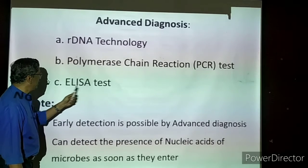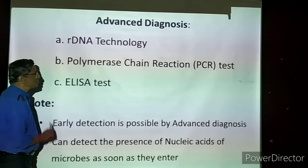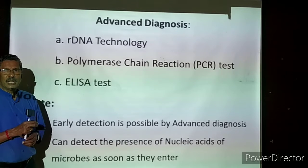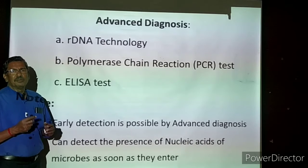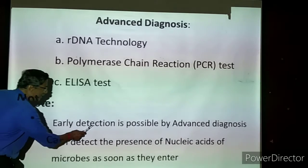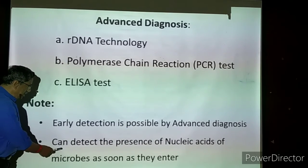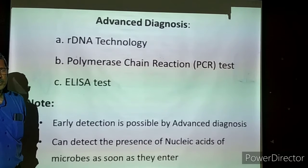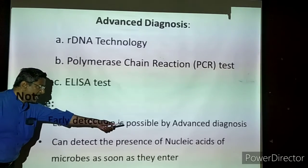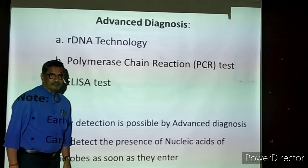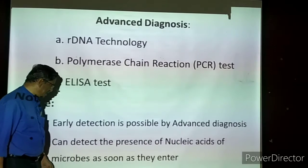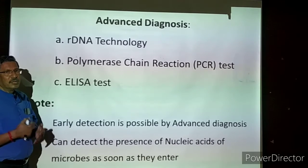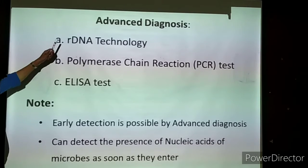The next one is ELISA test - E-L-I-S-A, all capital letters as it is an abbreviation. These tests are considered advanced because they work at the molecular level. Also, before the individual is suffering, we can find out whether the individual is having the microorganism. Early detection is possible by advanced diagnosis. We can detect the presence of the nucleic acid of the microbe. Nucleic acids means DNA and RNA - we can identify the DNA or RNA of microbes as soon as they enter, even before symptoms develop.